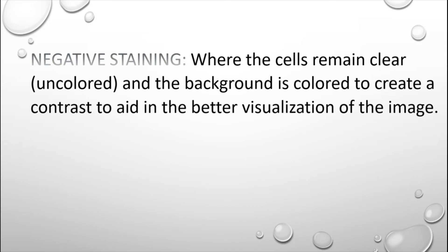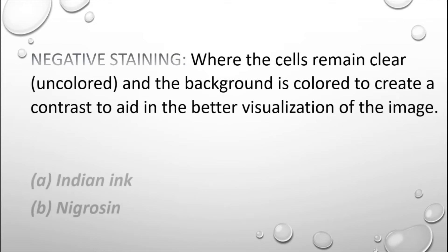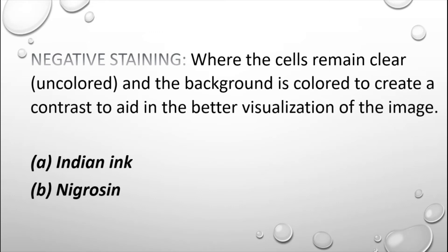The next category is negative staining, where cells remain clear — uncolored — and do not take any stain. The background is colored to create contrast and aid in better visualization. You can see clear, unstained bacterial cells against a dark background, particularly in India ink preparation or by using nigrosine stain. With nigrosine, the black color appears in the surrounding area while bacteria are seen colorless against the dark background — that is why it is called negative staining.